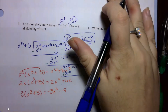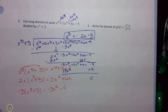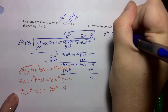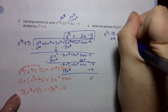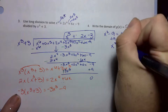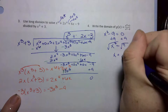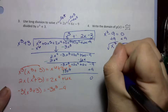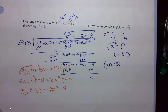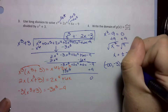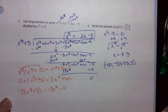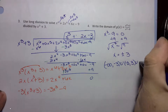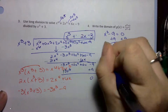Number 4 wants me to write the domain of this function. Domain is everywhere except where my denominator equals 0. So I'm going to take x squared minus 9 and set it equal to 0, add 9 to both sides to get x squared equals 9, then square root both sides to get x equals plus or minus 3. So those are where my holes in the graph are — remember these are where the asymptotes are occurring. My final answer is: negative infinity to negative 3, unioned with negative 3 to positive 3, unioned with 3 to infinity. I only take breaks for my holes.